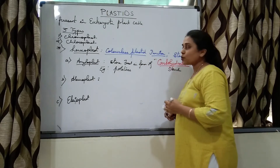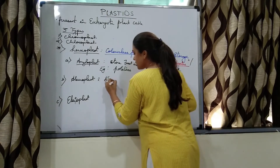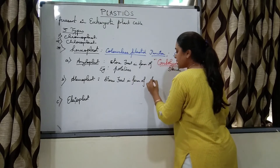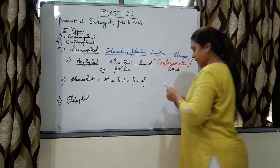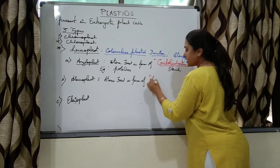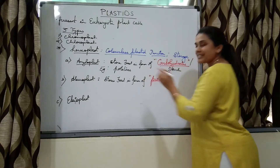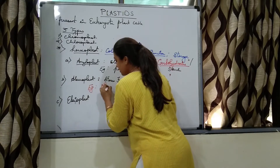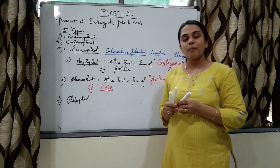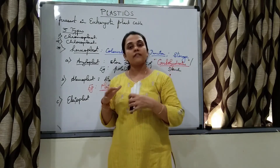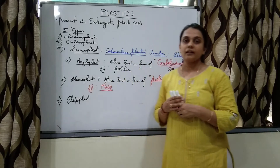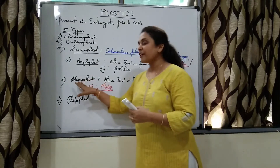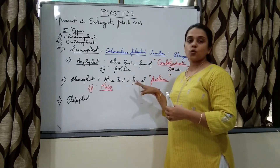The second type of leukoplast is aleuroplast. It stores food in the form of proteins. An example is maize — maize is a monocot seed and stores proteins, so maize possesses a large amount of aleuroplasts.